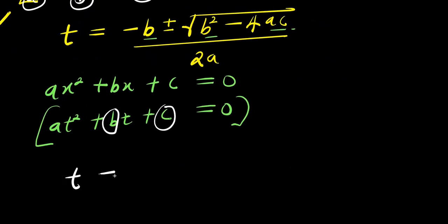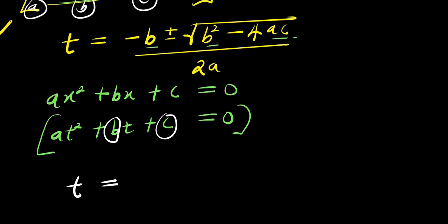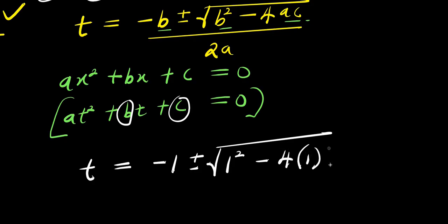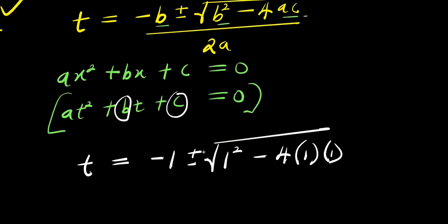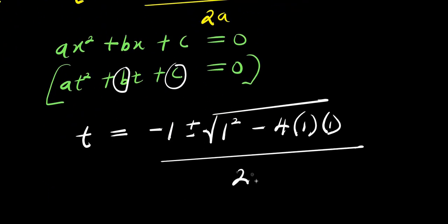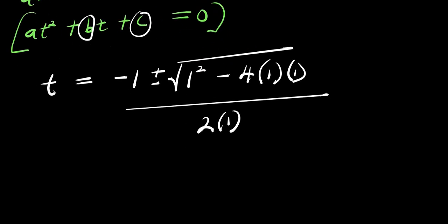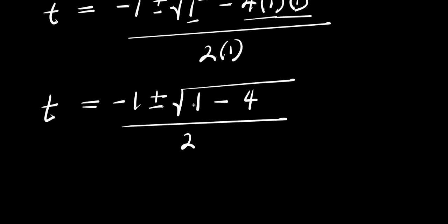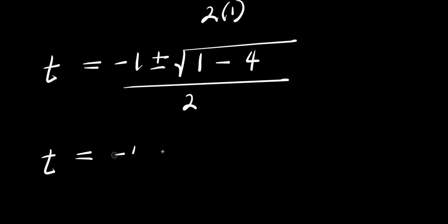So I will simply have t equals negative b — and b is 1, so I have negative 1 — plus or minus square root of 1 squared minus 4 times a (that is 1) times c (that is 1), divided by 2 times 1. So from here, t equals negative 1, plus or minus square root of 1 minus 4 times 1 times 1, that is 4, divided by 2. So t equals negative 1, plus or minus square root of 1 minus 4, which is negative 3, divided by 2.